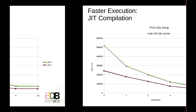To show the rough benefits: on TPC-H Q1, scale 100, fully cached, JIT compilation helps both with and without parallelism. The percentage improvement decreases at higher parallelism levels because some of the work is independent of expression evaluation, so it doesn't get faster from JIT. The parallelism has also parallelized a lot of other work, so we don't see as large a benefit.